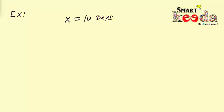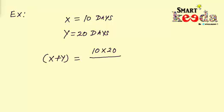Now let's take another example. If X takes 10 days and Y takes 20 days, how many days will they take working together? Now by using this trick you can easily find the right answer without even using your pen. Time taken by X and Y together is equal to 10 into 20 upon 10 plus 20, and that will give us 20 upon 3 days.